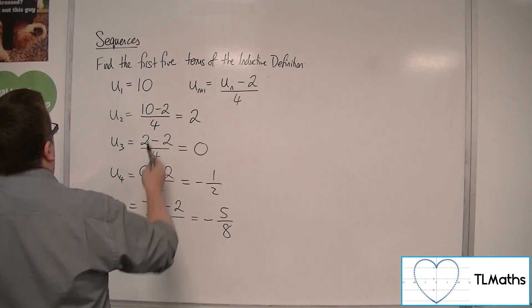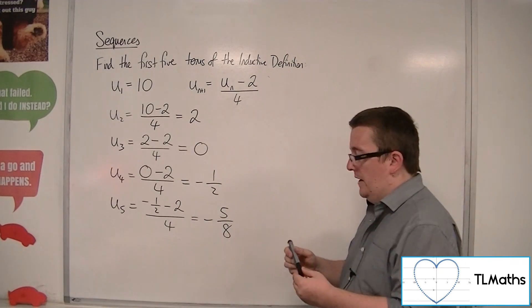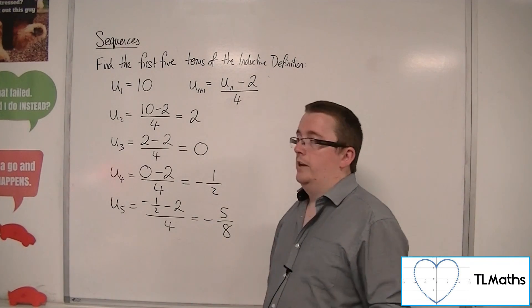And these 10, 2, 0, minus a half, minus 5 eighths are the first five terms of this sequence.